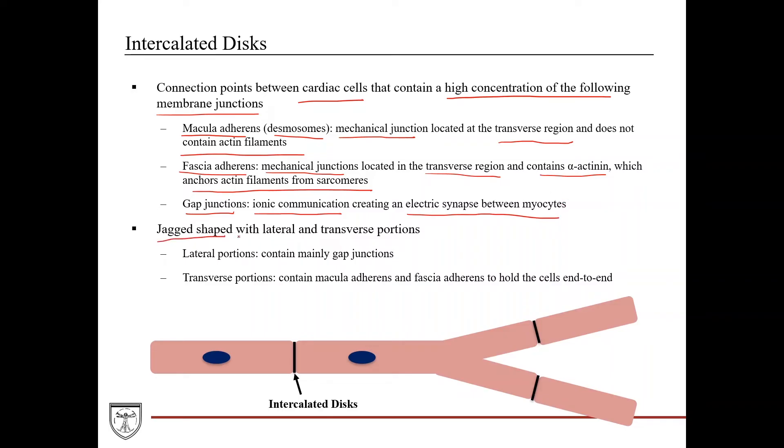So intercalated discs, they have a jagged shape, meaning they have a lateral and a transverse portion. So if we draw this out here, so this would be cardiomyocyte number one, and then we'll draw another membrane here like this, cardiomyocyte number two. Now this is, again, this is this diagram we showed earlier. These are the intercalated discs between. So here's one cardiac cell. Here's another one. And then this one again branches out. And then at these branch points, you have intercalated discs as well. And these would go on to other cardiomyocytes.